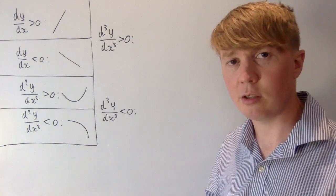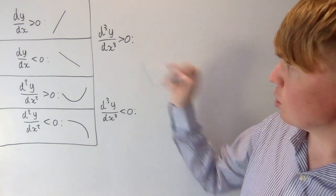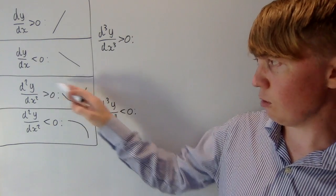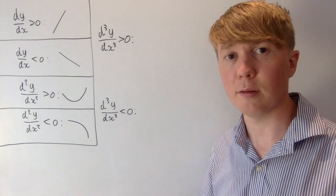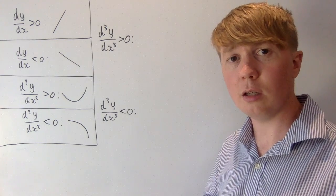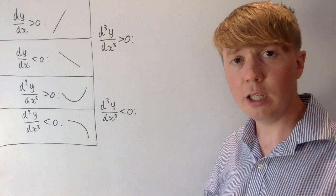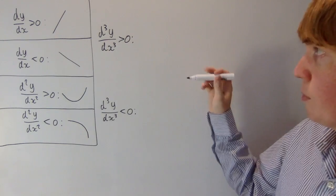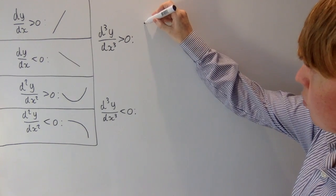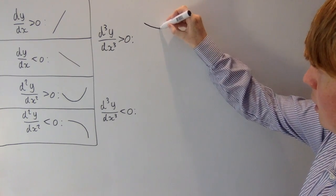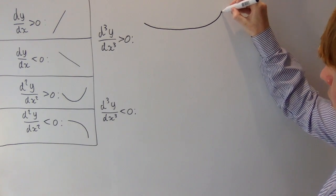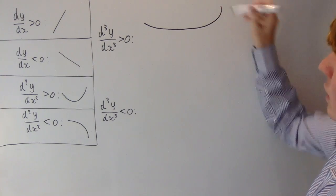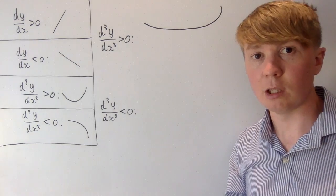Let's have a go at sketching this. If we assume the third derivative is positive, and the acceleration — the second derivative — is also positive, then we start off accelerating a little bit, and as we go further along, our acceleration gets bigger and bigger. We start off not accelerating that much, but then we become more and more curved as we go along.